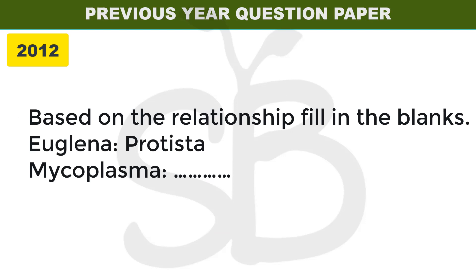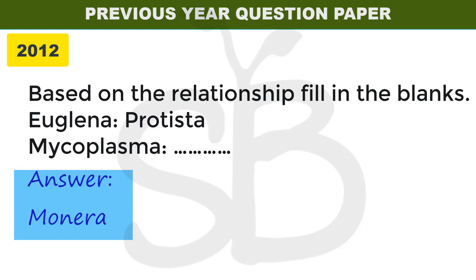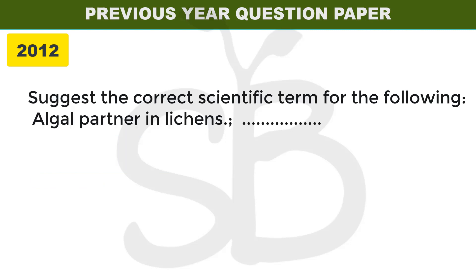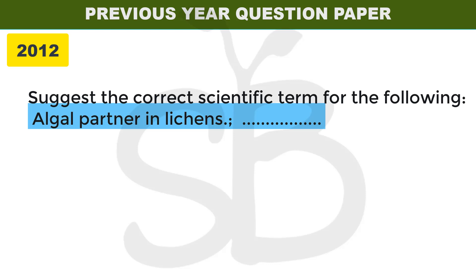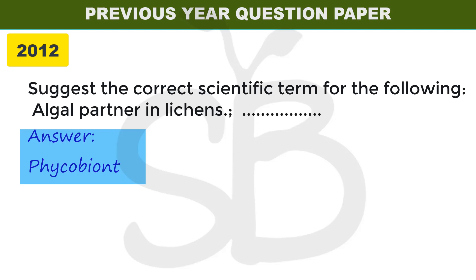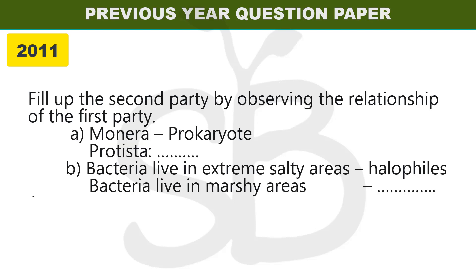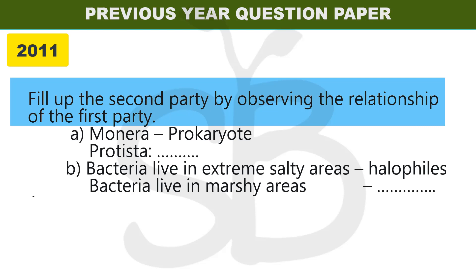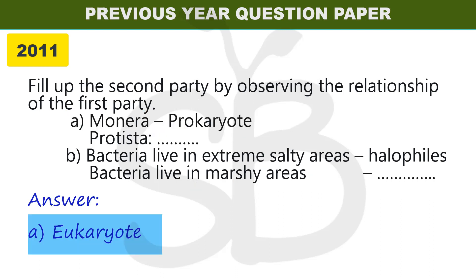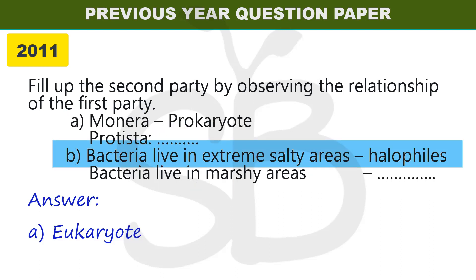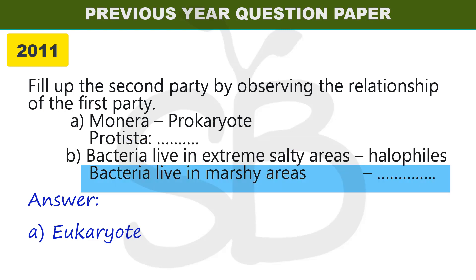2012 improvement exam: based on the relationship, fill in the blanks. Euglena belongs to Protista; Mycoplasma belongs to dash — the answer is Bacteria. Also: bacteria living in extreme salty areas are called halophiles, and bacteria living in marshy areas are called methanogens.